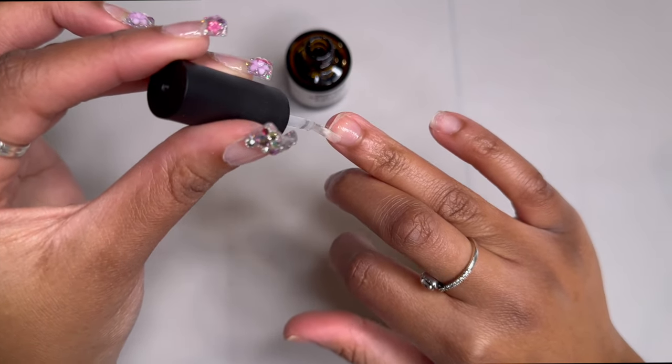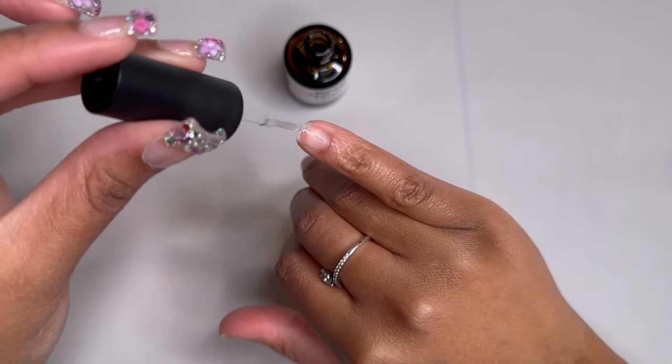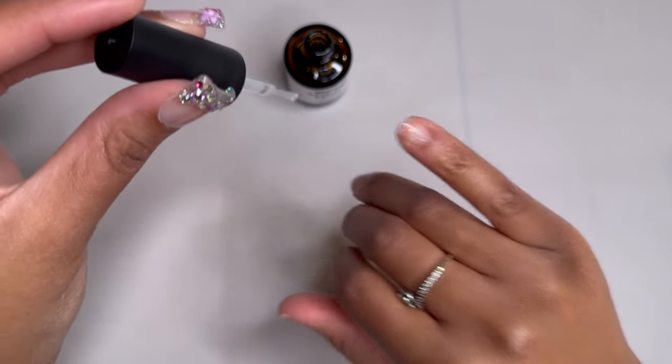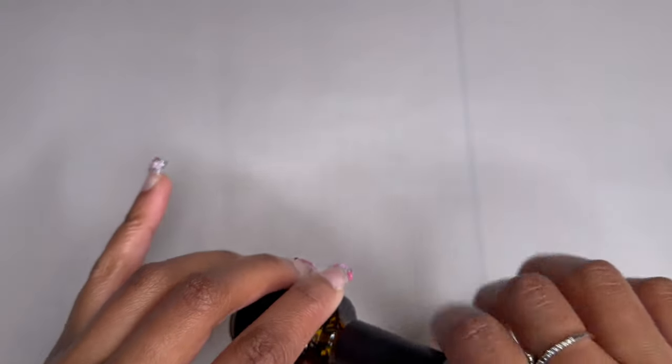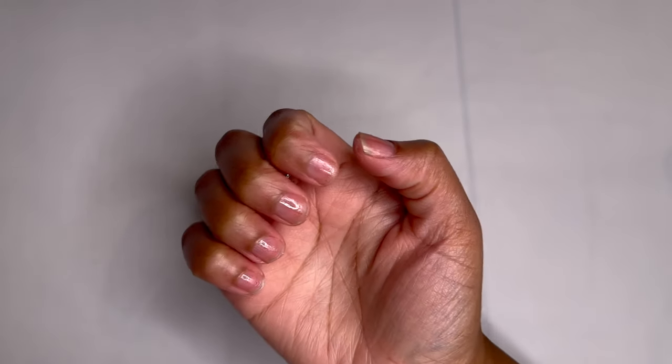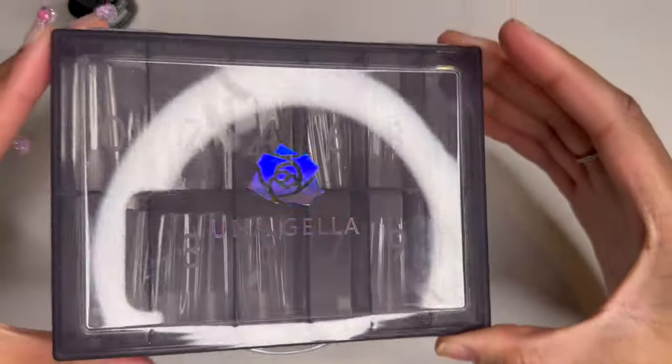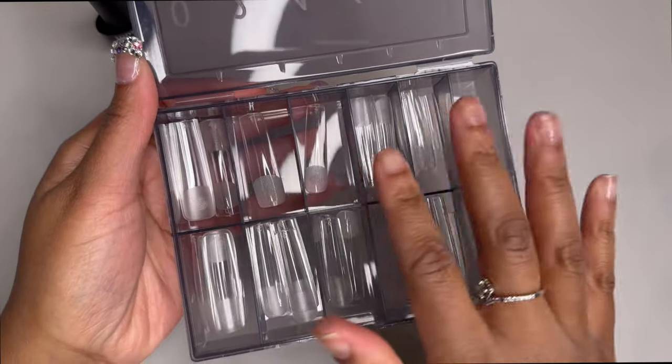Just like with the nail dehydrator we're going to let the primer air dry for about 10 to 15 seconds and then move on to the next step. For adhering the nails and having long retention I like to use base coat and then I'm going to use my Unigella full cover nail tips.